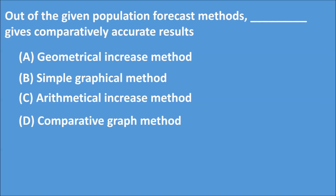Q6: Out of the given population forecast methods, which one gives comparatively accurate results? A) Geometrical increase method, B) Simple graphical method, C) Arithmetical increase method, D) Comparative graph method. The correct answer is Option D. Out of the given methods for population forecast, the comparative graph method gives comparatively accurate results.